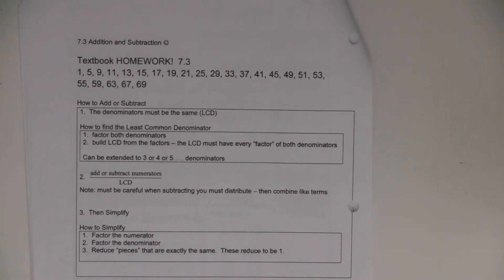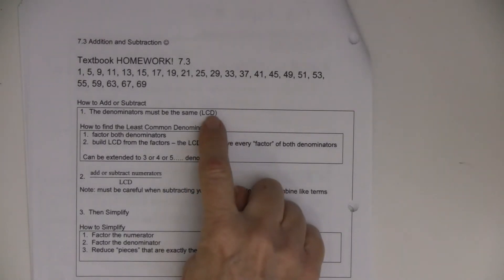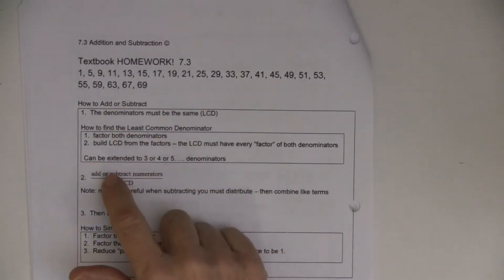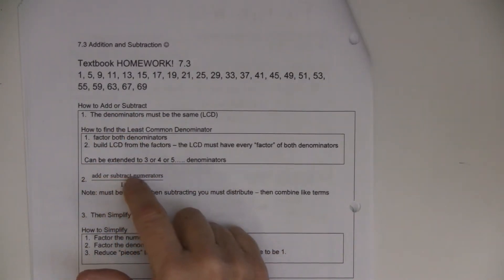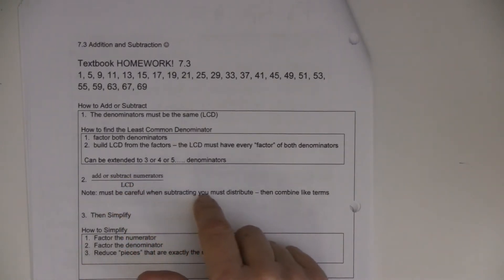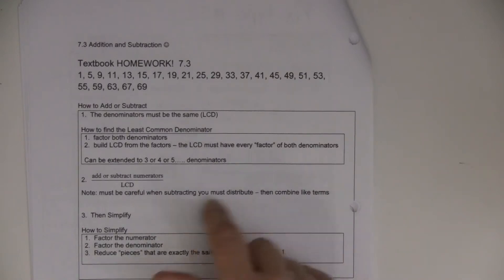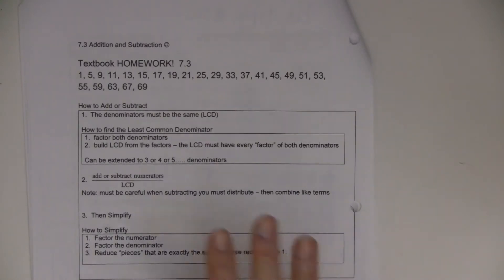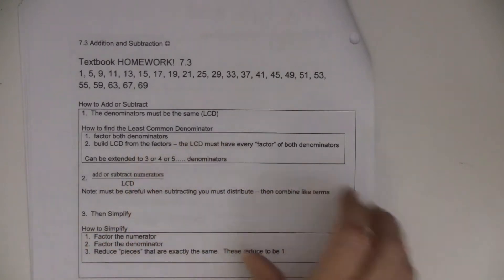How you add or subtract fractions is you have to have a common denominator. If they already have a common denominator, then what you do is you add or subtract your numerators over that common denominator. You have to be careful when you're subtracting because you have to distribute, then combine like terms. Then you simplify. We learned how to simplify in 7.1 — you factor the numerator and also the denominator and reduce pieces that are exactly the same. They reduce to 1. I'm going to come back on what to do if they don't have a common denominator.